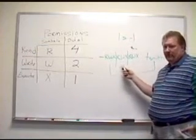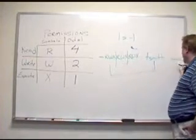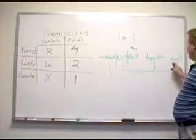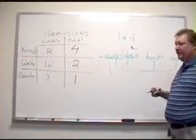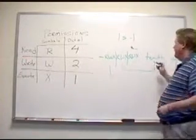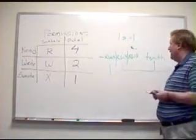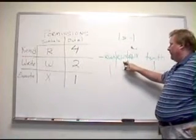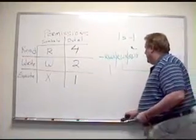The next three permissions, read, write, and execute once again, belong to the group. And the group that owns this file happens to be ACCT, and like I said, we'll use that as a representative representation for the accounting group. This is going to vary. Don't just assume that you're going to have an ACCT group, because that's just something I made up.